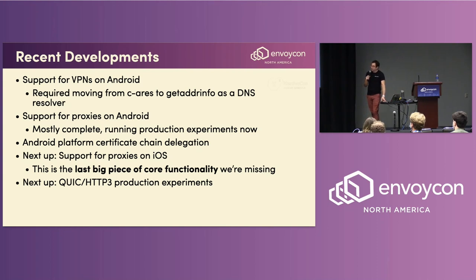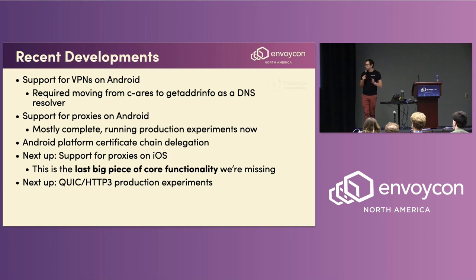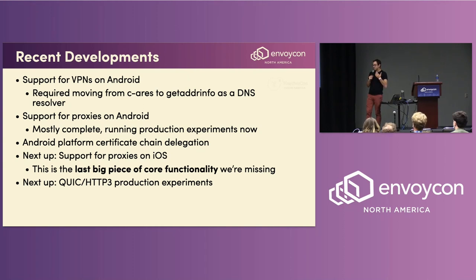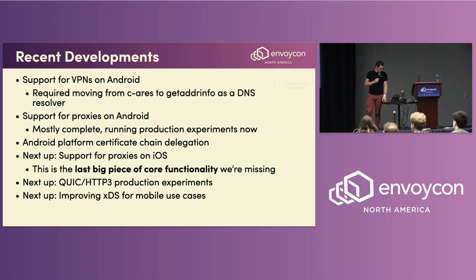We want to experiment with QUIC and HTTP/3. Envoy Mobile does support this at the moment, but we haven't run production experiments yet — there's probably some stuff we'll uncover once we start turning it on. The fact that Envoy has rich QUIC and HTTP/3 support means we get a lot of that more or less for free. The Envoy Mobile project vendors Envoy as a Git submodule and we keep it updated on a weekly basis, so as stats, bug fixes, or features are added upstream in Envoy, we benefit. Google contributors are also working on improving XDS integration and support from a mobile perspective, including caching XDS values.